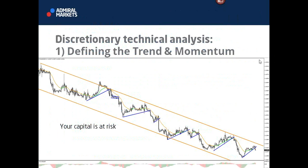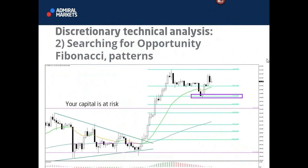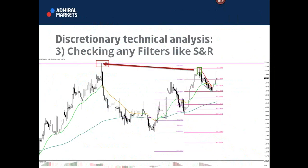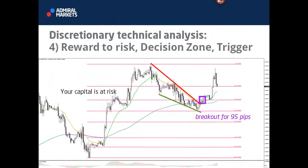In today's focus, we're looking at trend and momentum in a four-step process. First, you want to know the trend direction and where momentum is going. Then look at what opportunities are available, like fibs or patterns. Then we look at filters — are there any support or resistance levels that could stand in the way? And last but not least, if the first three steps have green lights, what area would I like to see price head to, what could be the trigger, and what is the reward-to-risk once the trigger happens at the decision zone?